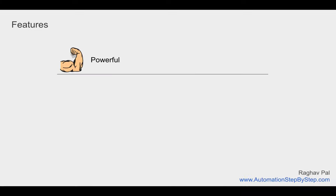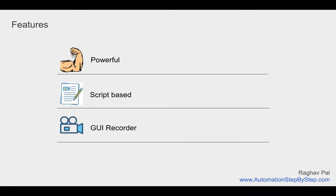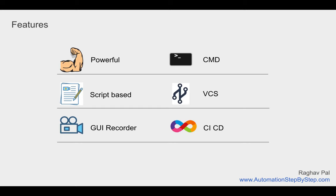We have already seen some high-level features: it is powerful, script-based, we can use a GUI recorder, we have the option to run Gatling tests from the command line, and we can use any version control system. Since Gatling is script-based, integrating with version control, CI/CD systems, or other processes is all possible.